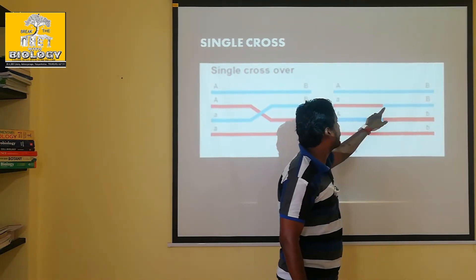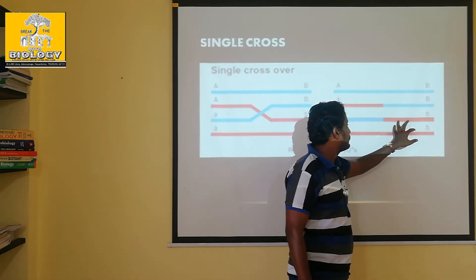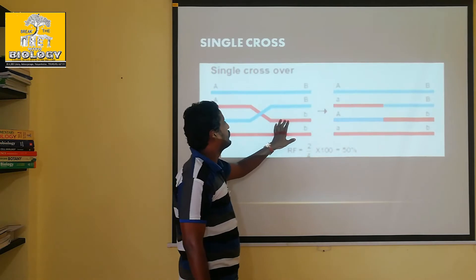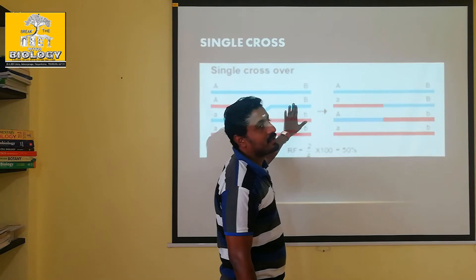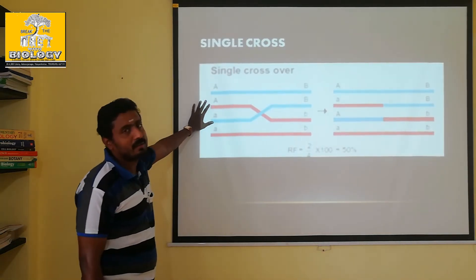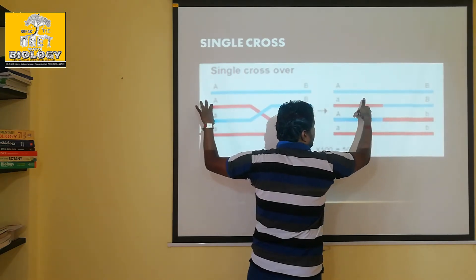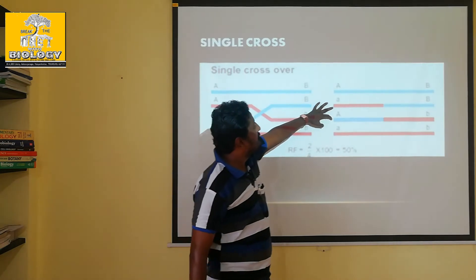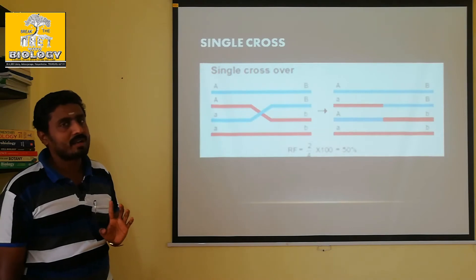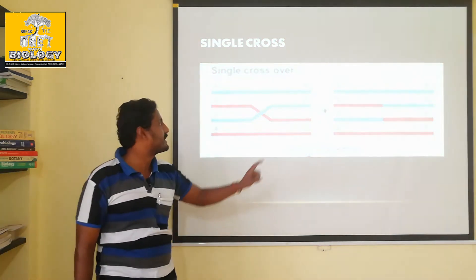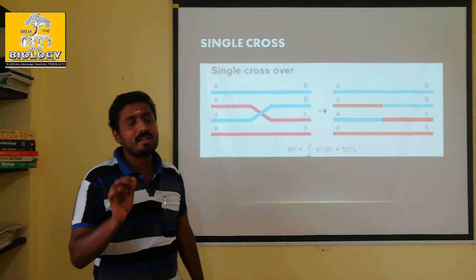We have a blue color and a red color. You can see that the blue color is changing — the same color is changed. That is why the name is single crossing over. Single crossing over involves one chiasmata formed. Chiasmata is the plural and chiasmata is also the singular form.